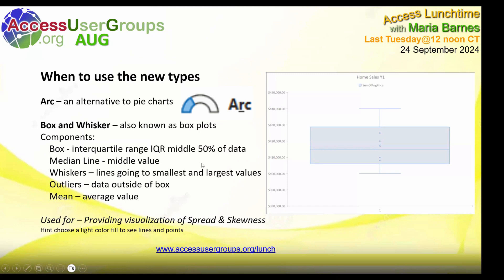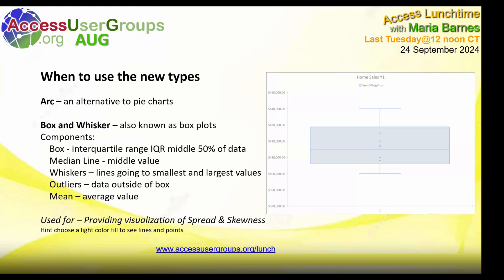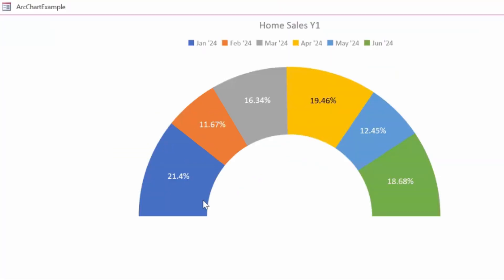We have the arc chart, which is an alternative to pie charts. If you think about it, a pie chart is a full circle and you get all the slices. The arc is only half of a circle — just the top half — and your slices go across the arc or rainbow shape. So it's just a different visual way of displaying data rather than a pie chart.